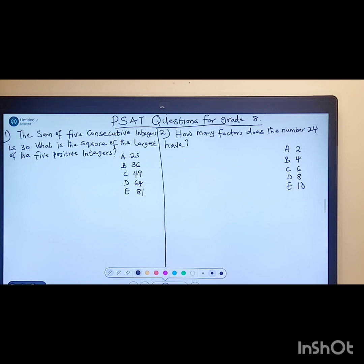We'll be solving 15 questions this week, all for grade 8. Each video will treat two questions each, and on the last one we'll do three questions. For the first question: The sum of five consecutive integers is 30. What is the square of the largest of the five positive integers?